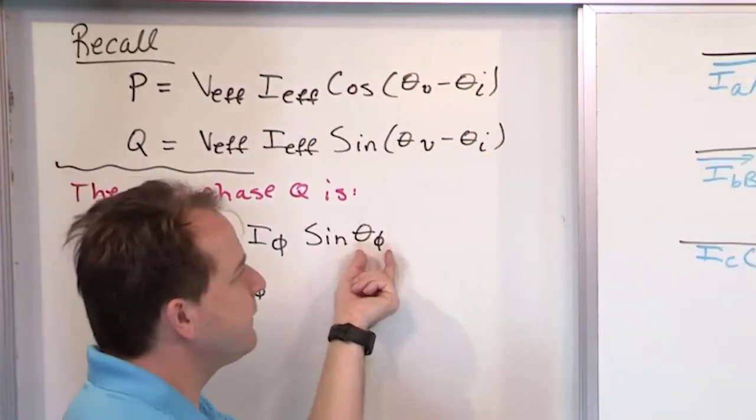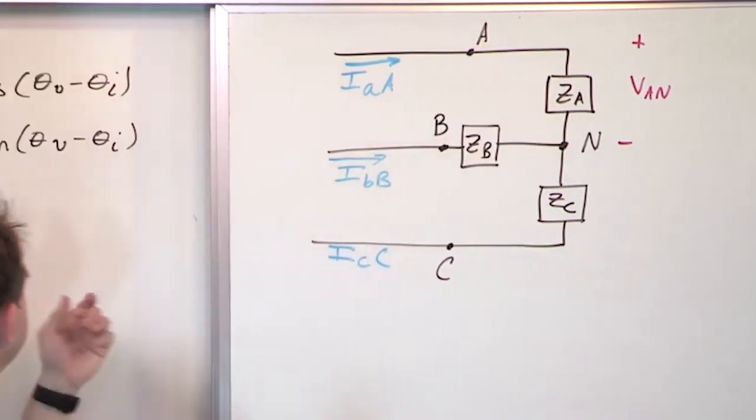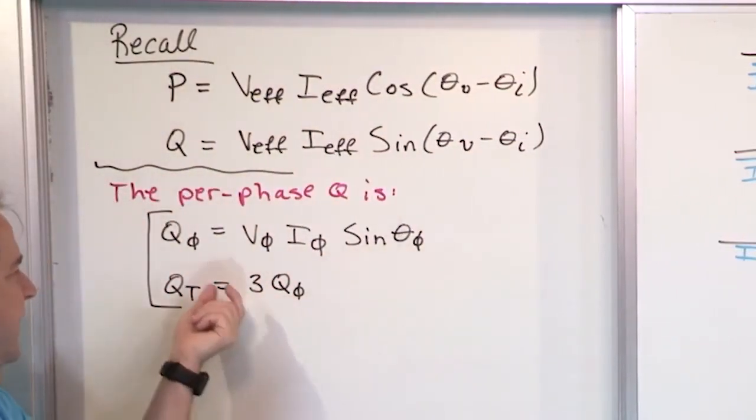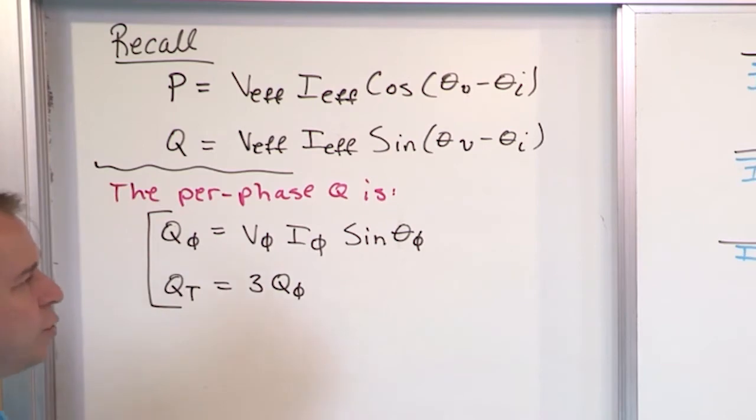And if you knew the phase difference, the theta V minus theta I, the phase difference across that element, then you would take the sine of that, multiply all this stuff together, and you would get the reactive power for any one of the three elements, A, B, or C, multiply by three, and you get the total reactive power.